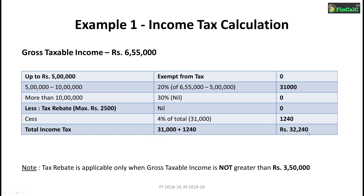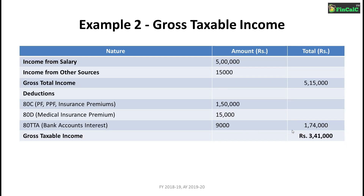Let's take another example. Income from salary is Rs 5,00,000 and income from other sources is Rs 15,000, making gross total income Rs 5,15,000. Deductions of Rs 1,50,000 in section 80C, Rs 15,000 in section 80D, and Rs 9,000 in section 80TTA give total deductions of Rs 1,74,000. Gross taxable income is Rs 5,15,000 minus Rs 1,74,000, equal to Rs 3,41,000.